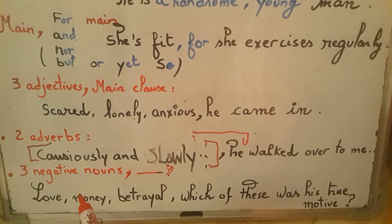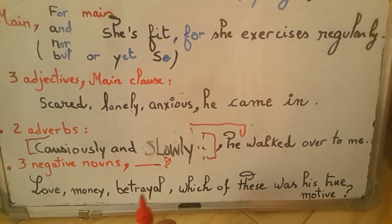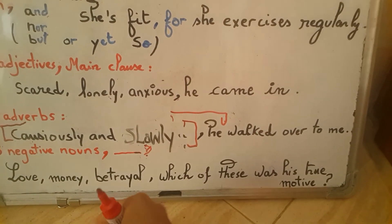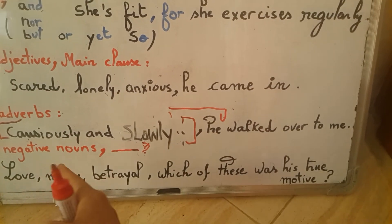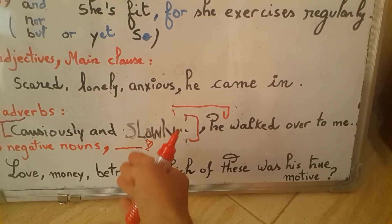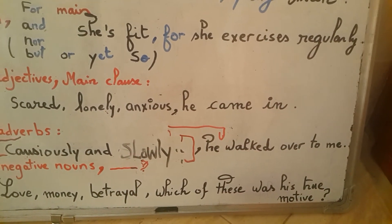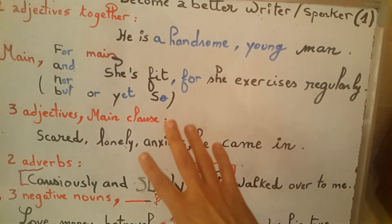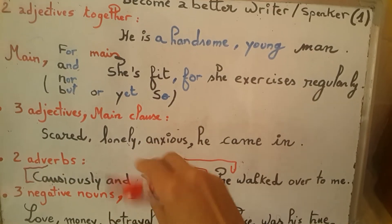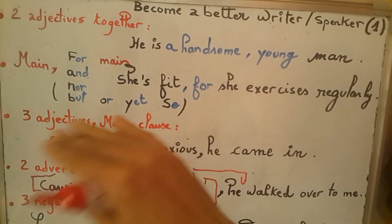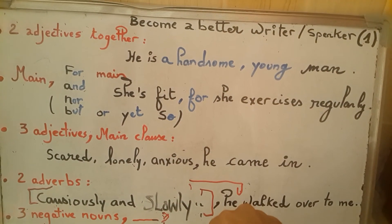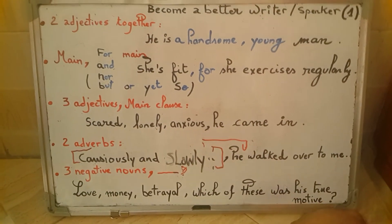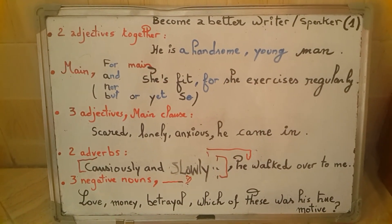For example: 'love, money, betrayal — which of these was his true motive?' Or: 'pain, sorrow, guilt — which of these would he feel first?' This list of techniques we have seen today can really help you make a dramatic improvement to the quality of your speech and writing. Thank you for watching and see you all soon.